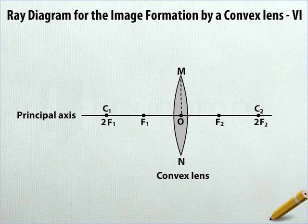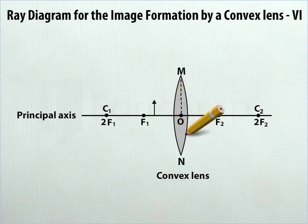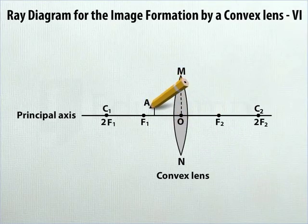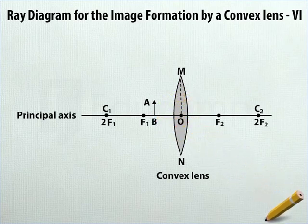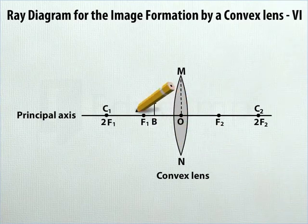Between F1 and the lens on the principal axis, draw a vertical arrow pointing upwards. Mark the top of the arrow A and the bottom B in uppercase. Label the arrow as object.